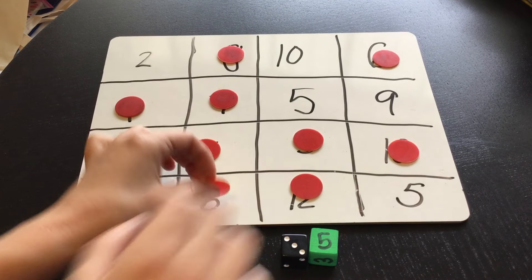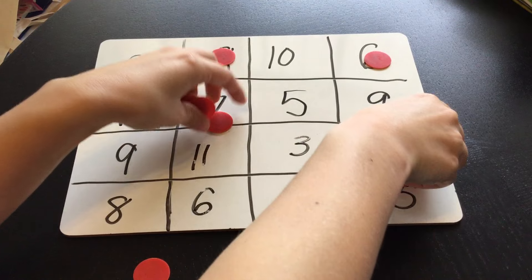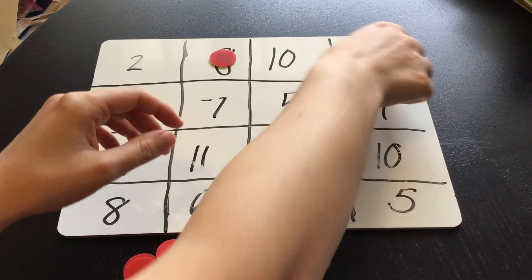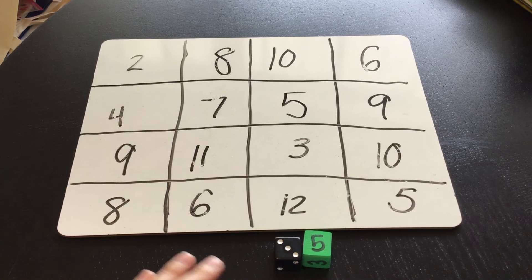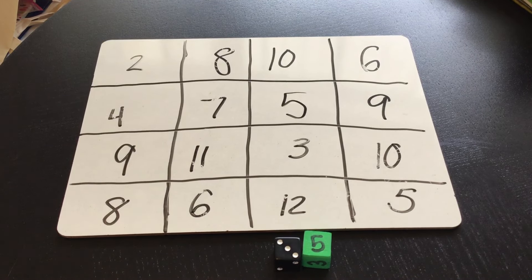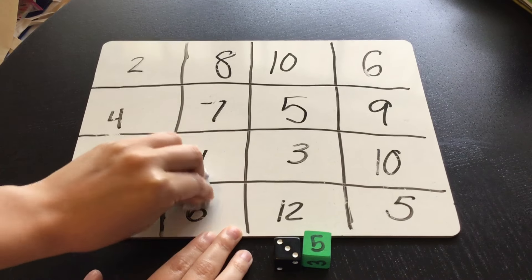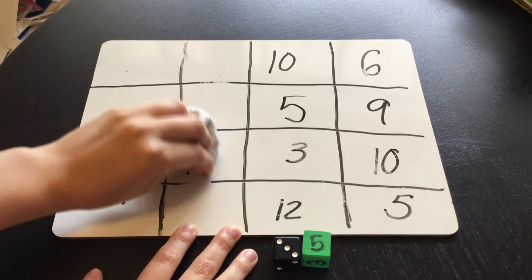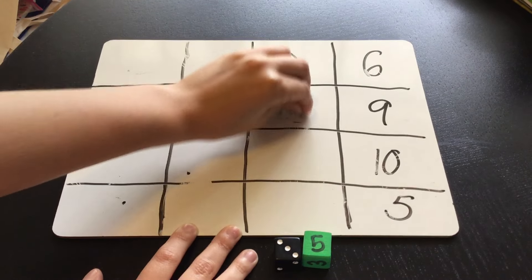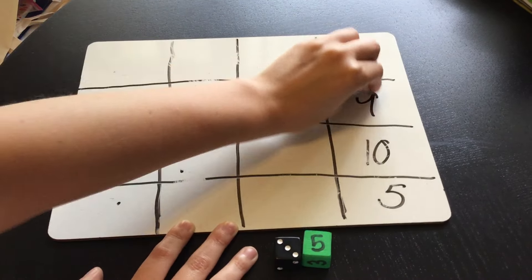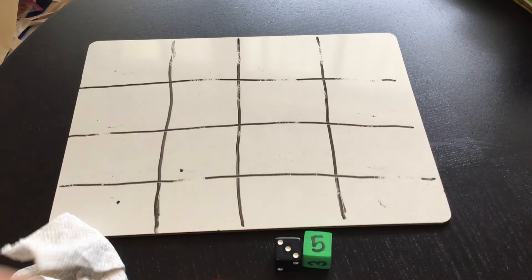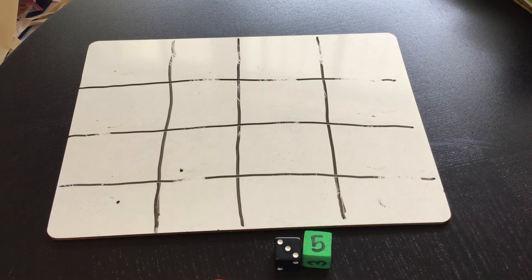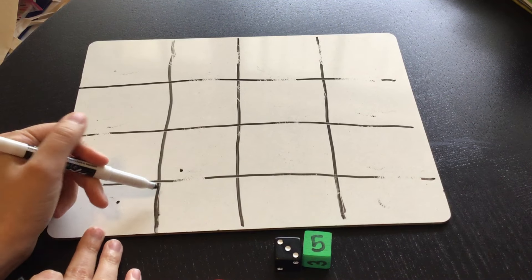Now I can play this with subtraction too if I want to. I just have to use different numbers. The highest number I can get on the two dice when I roll when I subtract is a five and the lowest number I can get is a zero. So the good thing about using a whiteboard marker is that I can erase and do them again, but you can always just clear your pieces off and play a second time. So if I'm doing subtraction, my numbers are going to repeat a lot because I can only use zero through five.